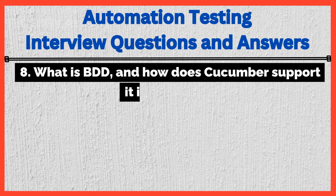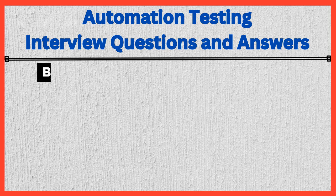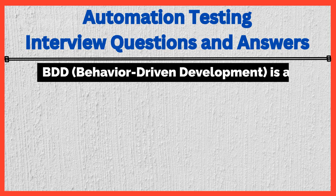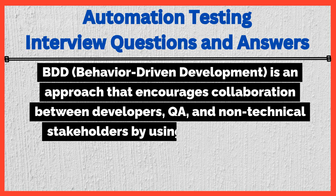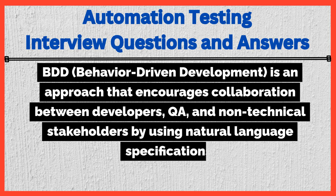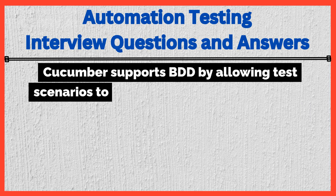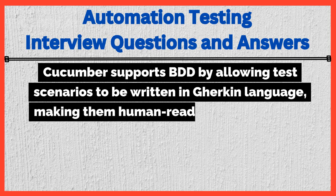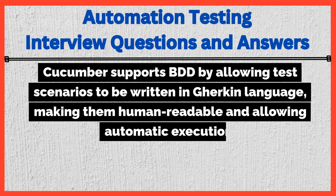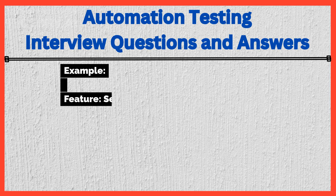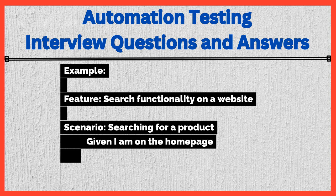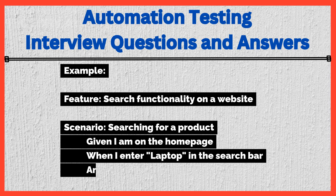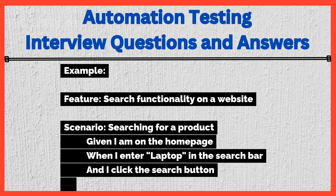What is BDD, and how does Cucumber support it in Selenium? BDD (Behavior Driven Development) is an approach that encourages collaboration between developers and non-technical stakeholders by using natural language specifications. Cucumber supports BDD by allowing test scenarios to be written in Gherkin language, making them human-readable and allowing automatic execution. Example — Feature: Search functionality on a website. Scenario: Searching for a product. Given I am on the home page, When I enter 'laptop' in the search bar and I click the search button, Then I should see search results.